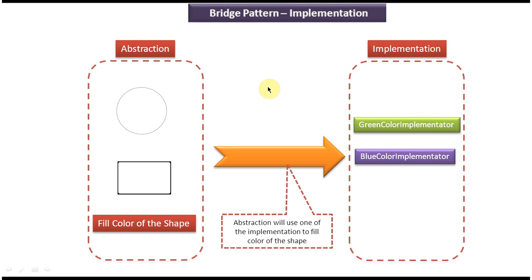Now we'll see the scenario where we can use the bridge design pattern. In the bridge design pattern there are two layers: the first layer is the abstraction layer and the second layer is the implementation layer. If I make any changes in the implementation layer, it won't affect the abstraction layer, and likewise, changes in the abstraction layer won't affect the implementation layer.